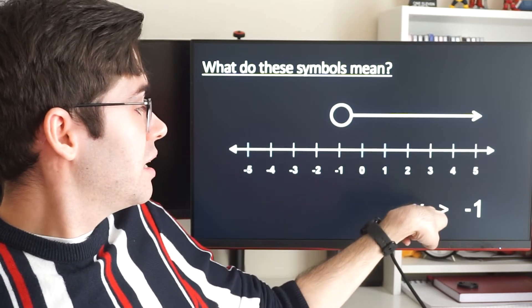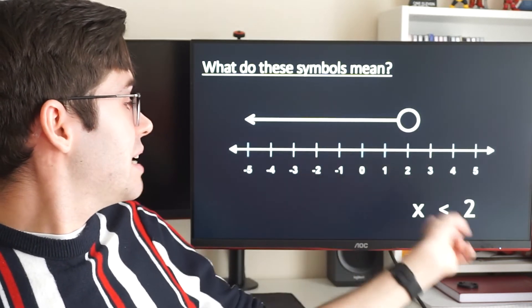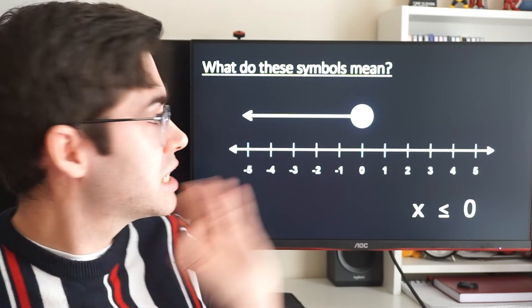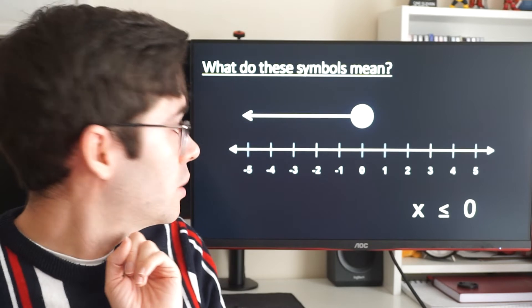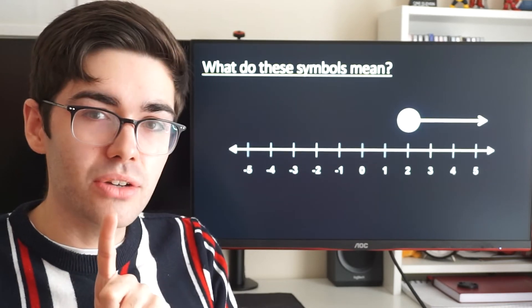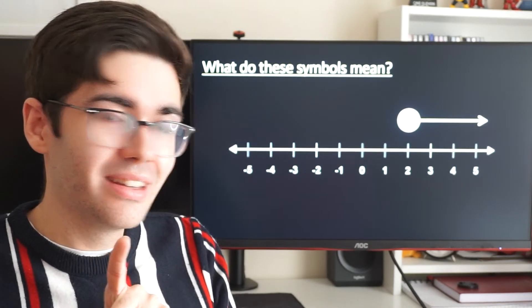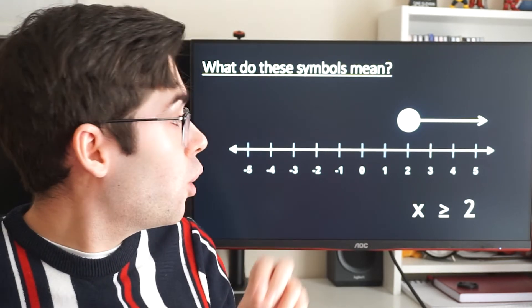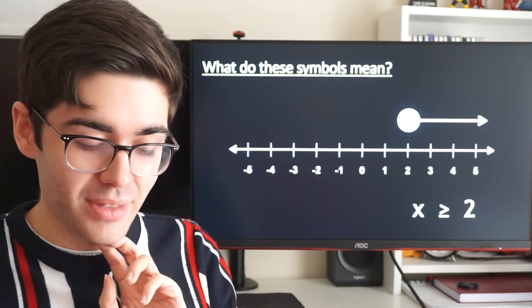Same for the last one. So that arrow there is the same as that arrow. That arrow there is the same as that arrow. That might help you. So this was x is less than or equal to zero because it's a filled in circle, so it could be equal. Next one, have a go, see if you can work out what this one is. Look at the way the arrow is facing. This is x greater than or equal to two.